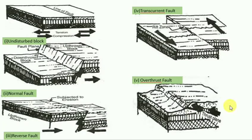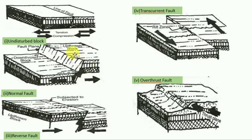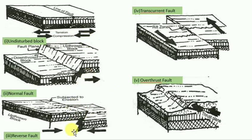There are five types of faults. In a normal fault, tension acts in two opposite directions away from a point. If a force acts toward a point from two directions, it is a compression force. A reverse fault occurs when compression is the acting force.